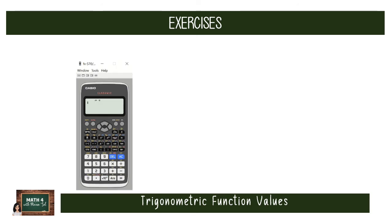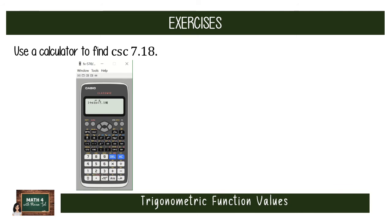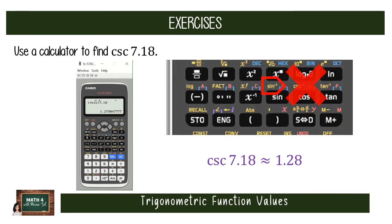Let's find cosecant of 7.18. Since the calculator is in radian mode, we can proceed. Cosecant is the reciprocal of sine, so press 1 over sine of 7.18. Do not use sine inverse, as that is not equal to cosecant of 7.18 — we will cover inverse trigonometric functions separately. To be clear: for cosecant, use 1 over sine; for secant, use 1 over cosine; and for cotangent, use 1 over tangent — not the inverse functions.